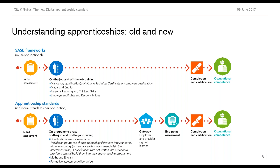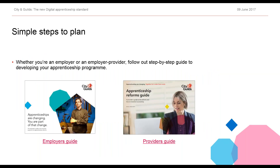There's still certification upon completion — an apprenticeship certificate from City and Guilds and from the funding agency — and the apprentice is deemed occupationally competent. There's guidance available for employers and for providers, linked directly from the City and Guilds website, with further information available later in this presentation.